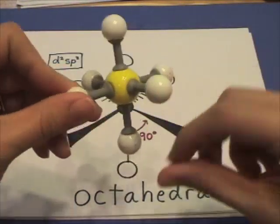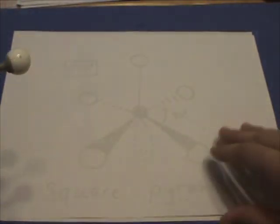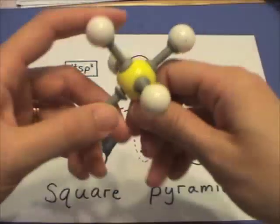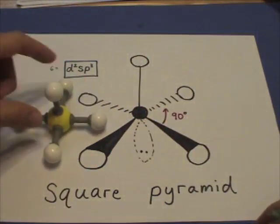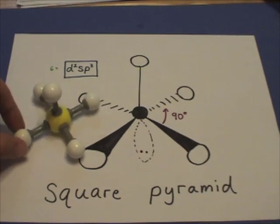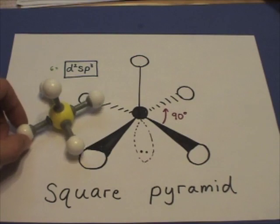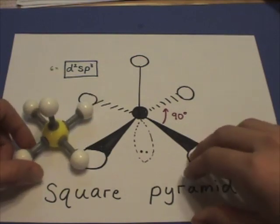Six sigma bonds is d2sp3 hybridized — octahedral with 90 degree bond angles. If one of the sigma bonds is instead a lone pair of electrons, it is also d2sp3 hybridized but it looks like a square pyramid.